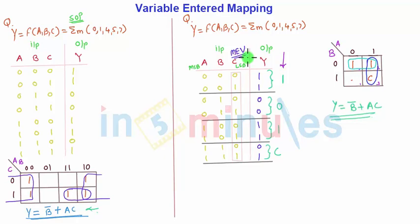You can easily convert a five variable K-map into a four variable K-map with the help of Variable Entered Mapping. So this is a very helpful method to reduce the logical expression. Thank you for watching in five minutes. That's all about Variable Entered Mapping.